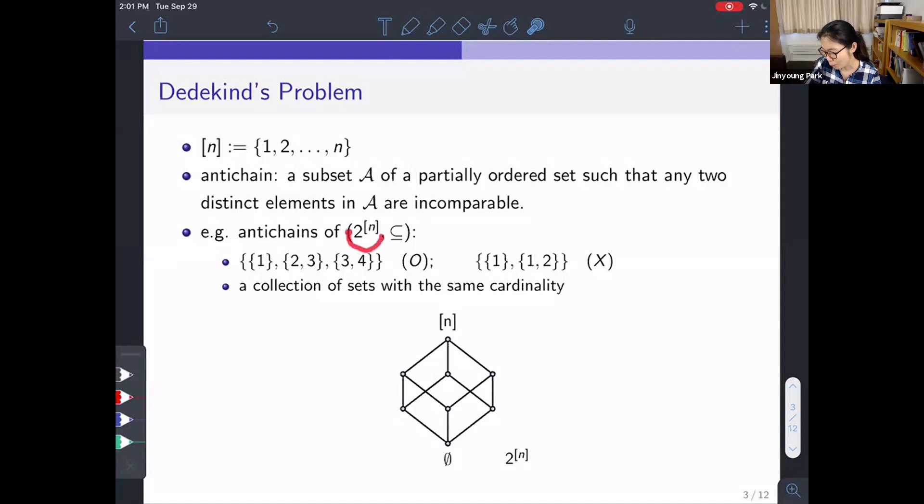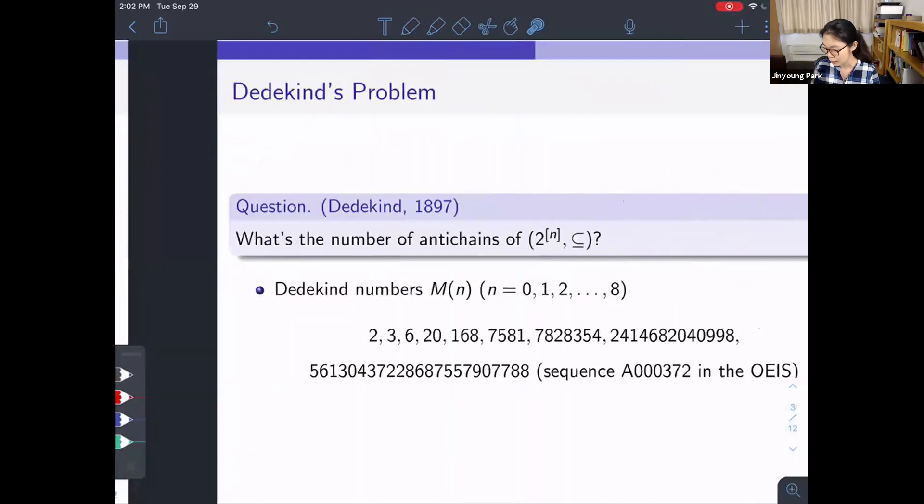For example, let's consider the power set 2^n as a poset with this natural order. Then first, this collection is an antichain because there is no containment between any elements. On the other hand, this collection is not an antichain because you see why. An easy way to get an antichain of 2^n is to take a collection of sets with the same cardinality. For example, let's pretend that this is the picture of 2^n as a poset. We have this empty set at the bottom and n at the top. Then, for example, if we take some sets from the same level, then this forms an antichain because there is no containment between any elements.